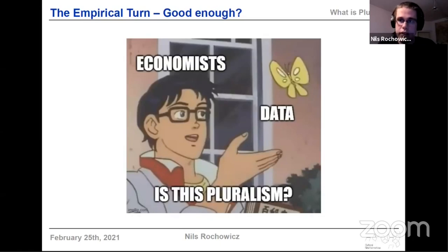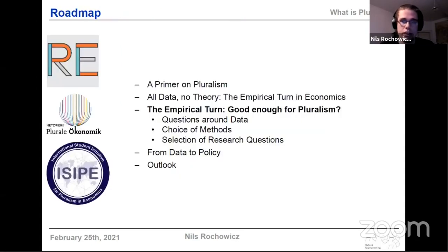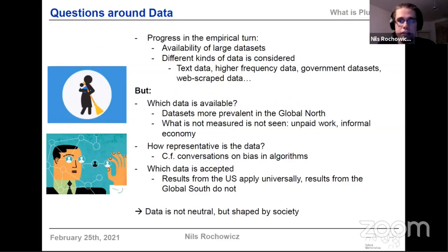So let's appraise whether this empirical turn is good enough for pluralism. I want to do this along three major lines: first, what actually is data and where does it come from; second, which methods are used to analyze this data; and third, the selection of research questions. To be fair to the empirical turn, the progress in the availability of data sets has really been substantial and outstanding. There are lots of different kinds of data being considered — text data, data scraped from the web, high frequency data from financial markets, and government data sets of unprecedented detail.